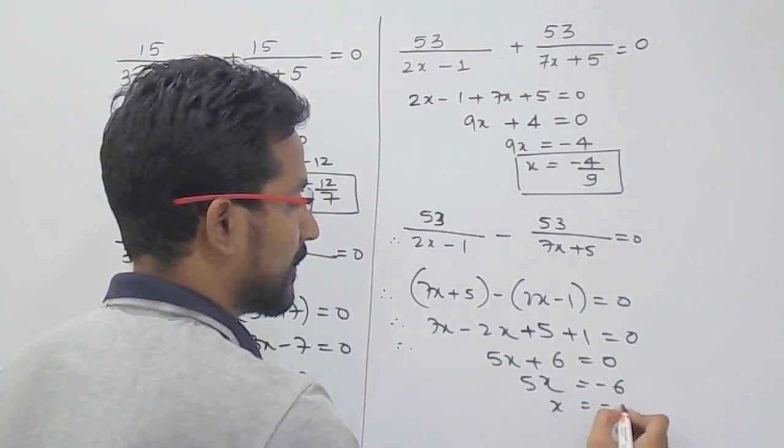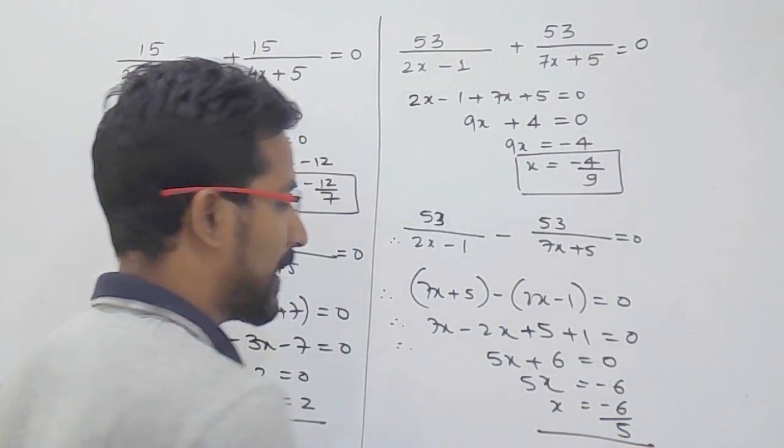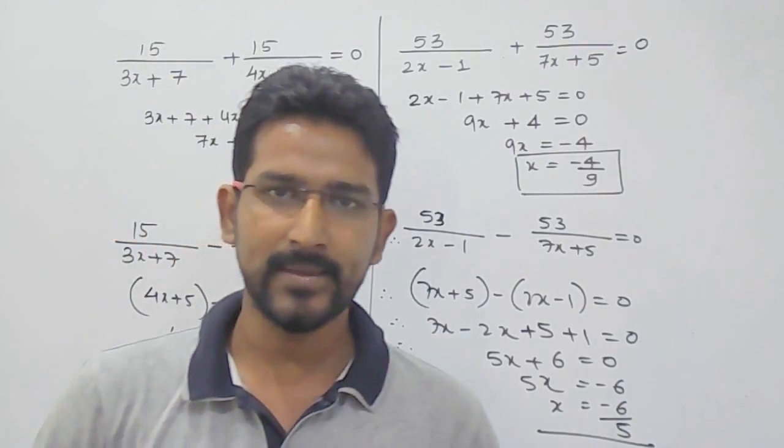So x is minus 6 by 5. So answer is x equals minus 6 by 5.